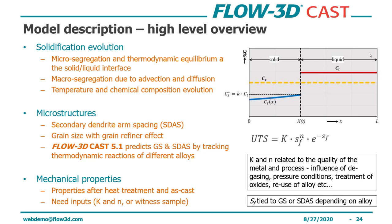What we do in Flow3D Cast 5.1 is predict the grain size and the secondary dendrite arm spacing by tracking thermodynamic reactions of different alloys, and from there we make progress towards mechanical property prediction. In terms of solidification evolution, we have micro-segregation and thermodynamic equilibrium at the liquid-solid interface, macro-segregation due to advection and diffusion, and temperature and chemical composition evolution. All of these things determine the evolution of solidification, and all of them are things we can track with the solver.